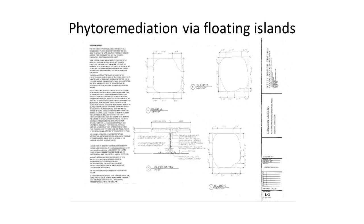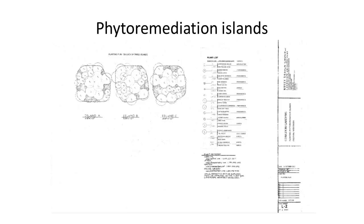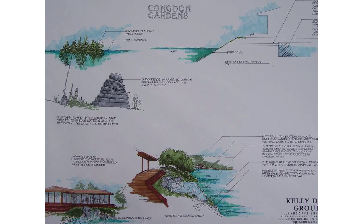These are some of the floating islands — they're about 12 feet around, mixed with a variety of species. This is one of the graphics I did to sell the idea to the client of what phytoremediation is. One of the reasons I like this slide so much is it illustrates how much plant material is below the surface — all those great roots.